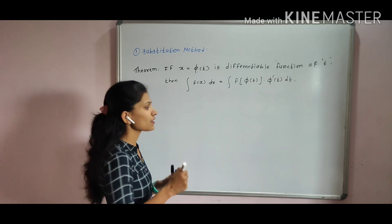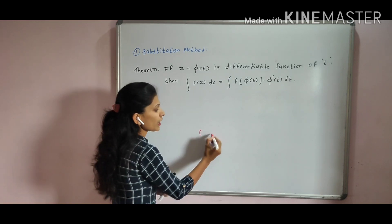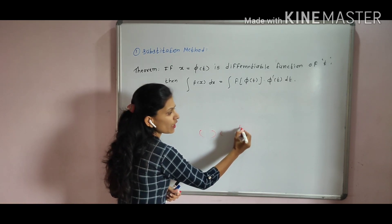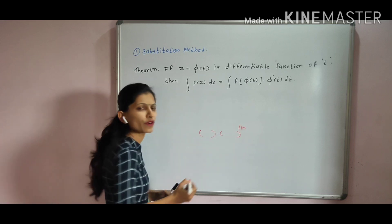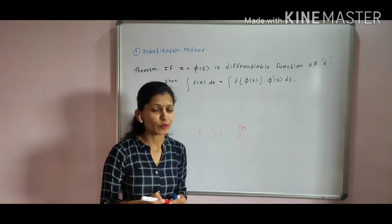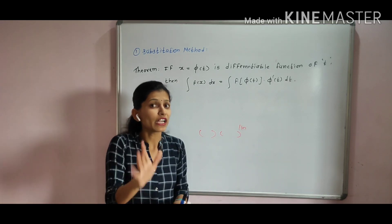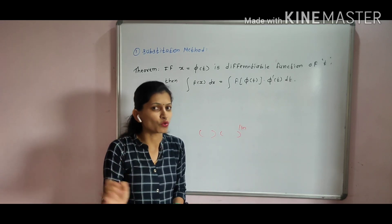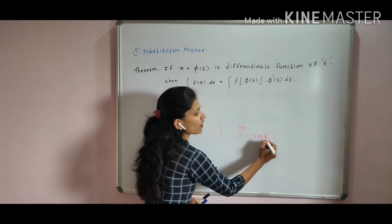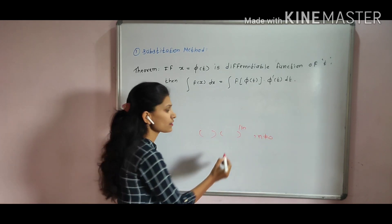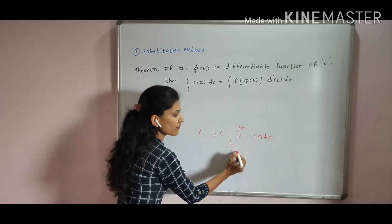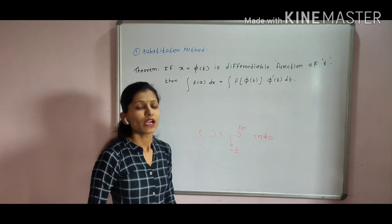Second hint: if you have a function raised to a power equal to 1 upon n, where n is an integer and n is not equal to 0, then put that expression in the bracket equal to t.